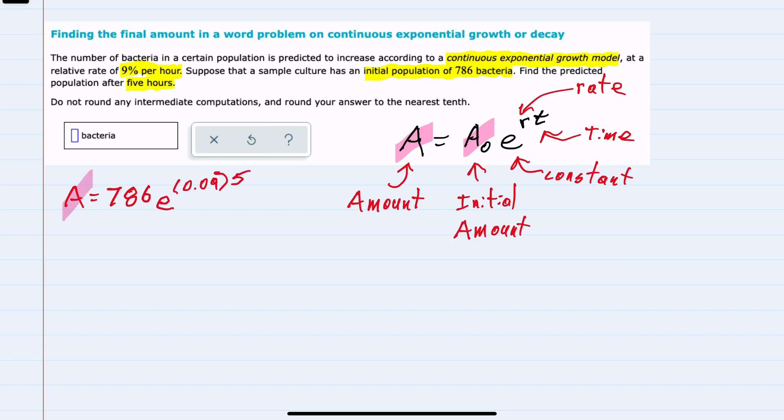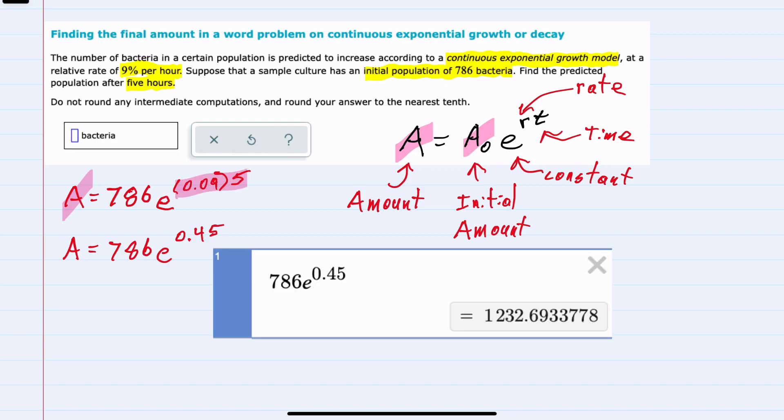The A that we are looking for is isolated on the left-hand side. On the right-hand side, I can simplify this by multiplying those two exponents to be 0.45. And then to avoid any intermediate computations, I use Desmos